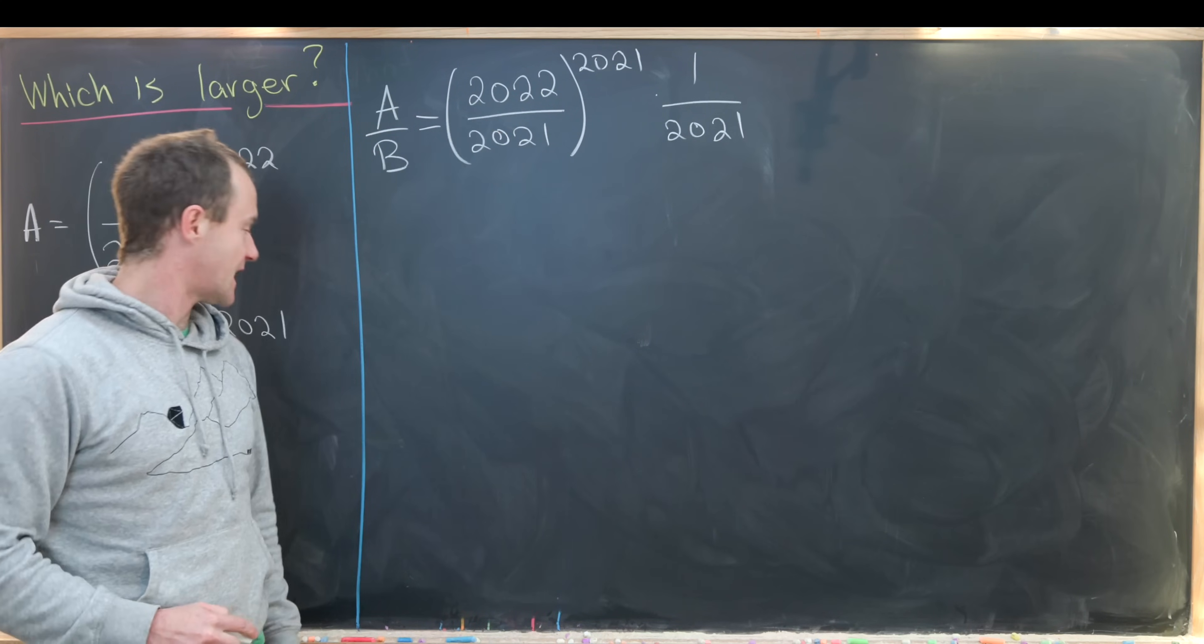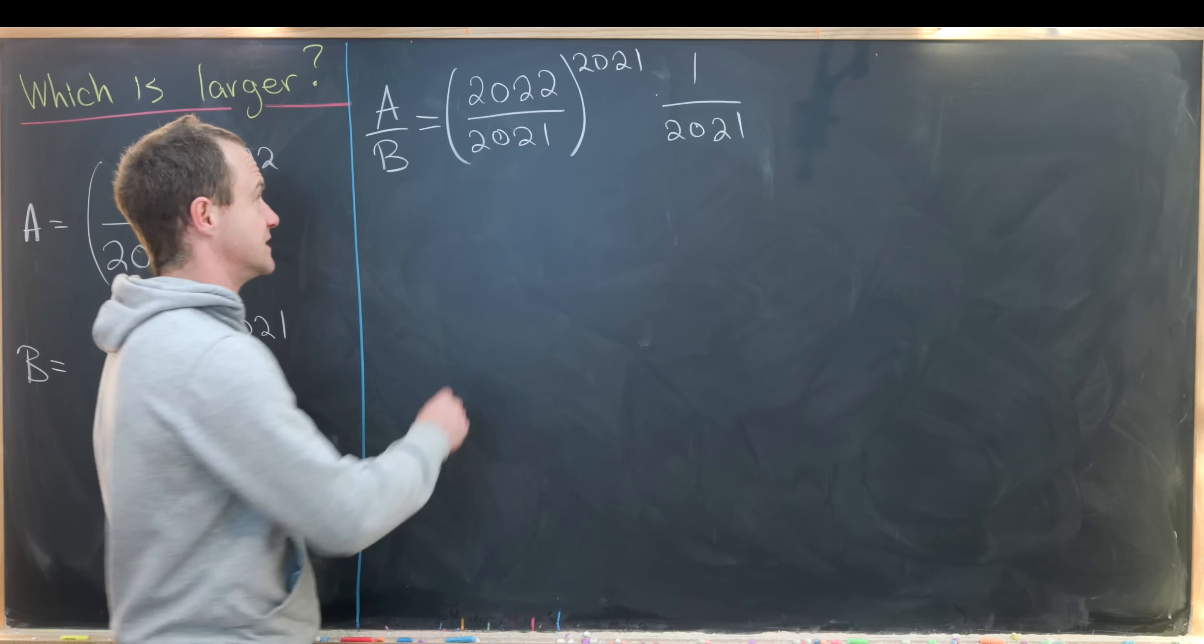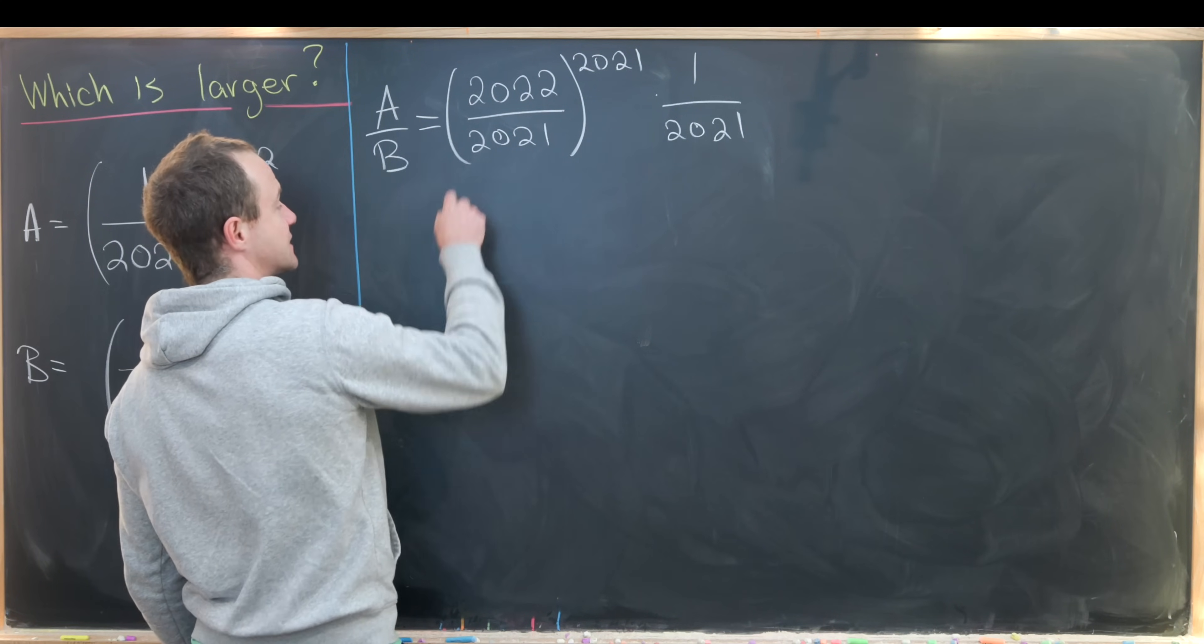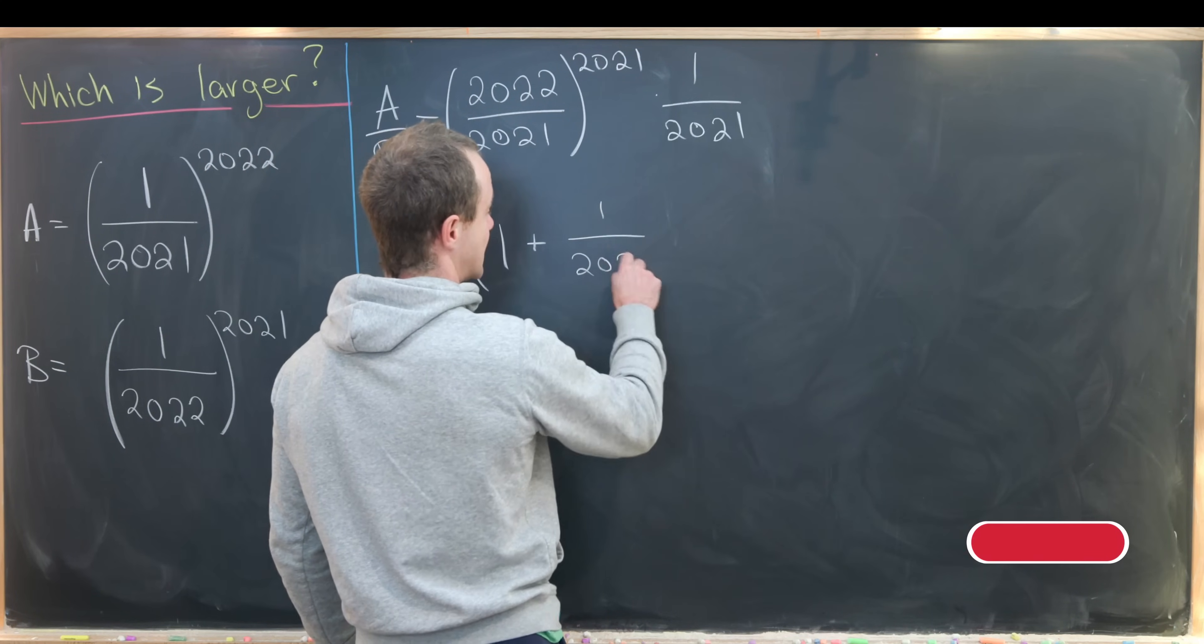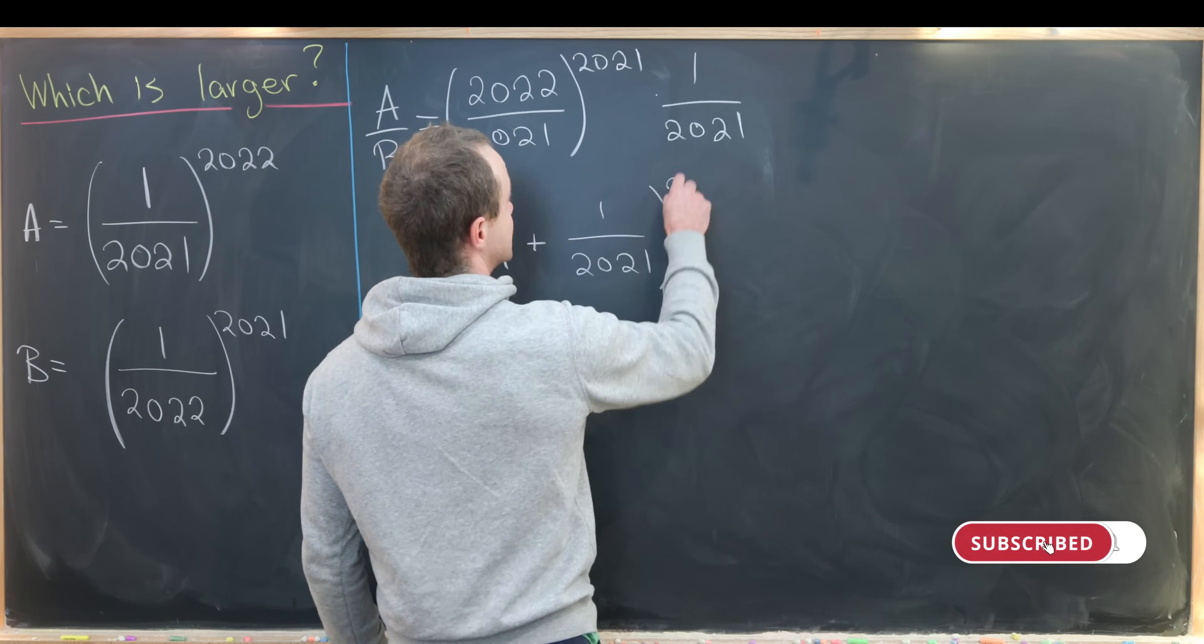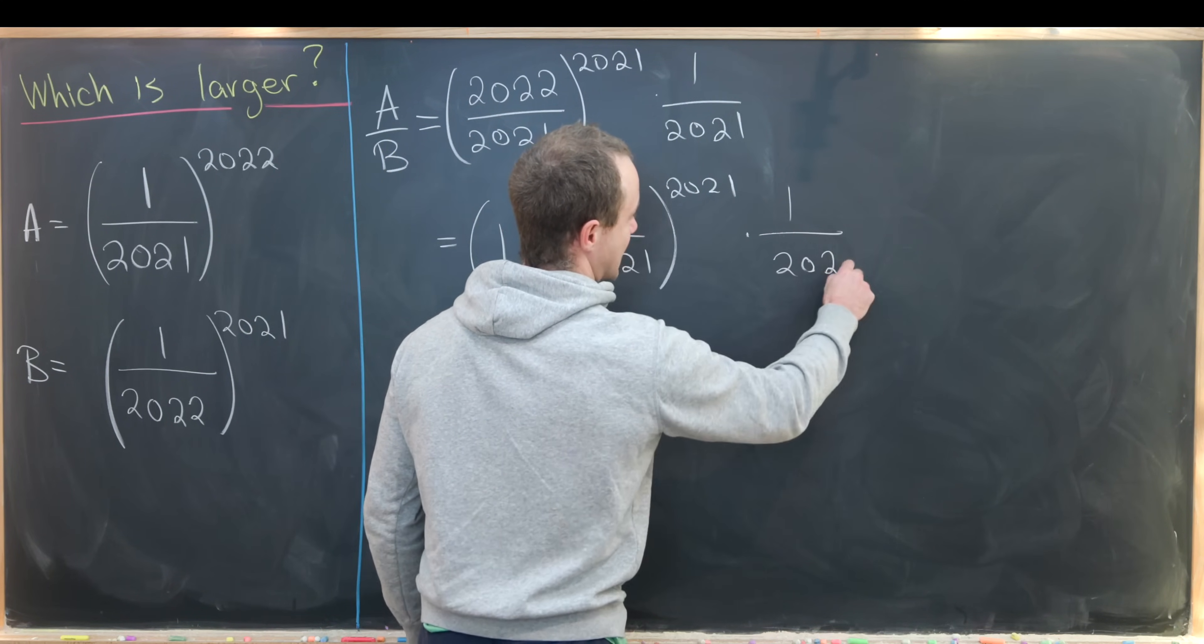Now I'll take this 2022 and write it as 1 plus 2021. That allows us to rewrite this as 1 plus 1 over 2021 to the 2021 times 1 over 2021.